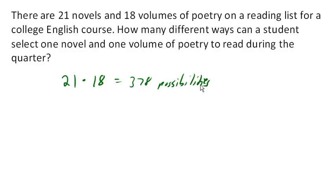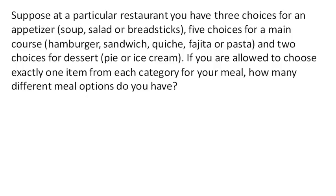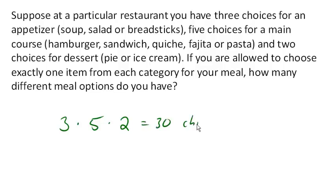Let's look at another one. Now suppose that we're at a restaurant and we have three choices for the appetizer, five choices for a main course, and two choices for dessert. If we're allowed to choose exactly one of each of them, then we would have three times five times two, which equals 30 choices. It is important to note that this assumes we actually pick one from each category.